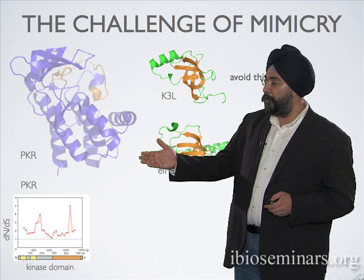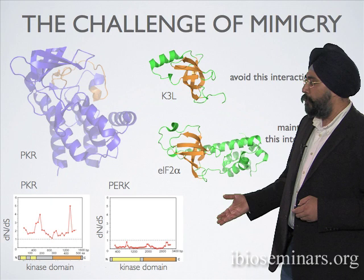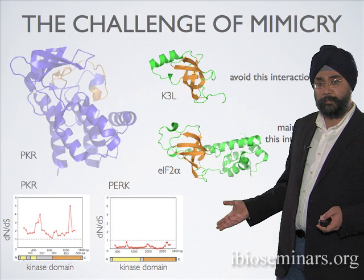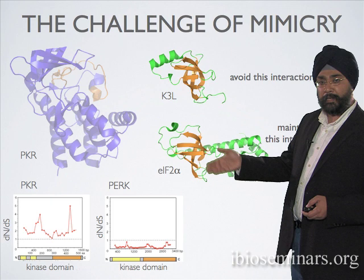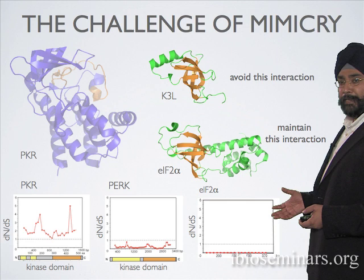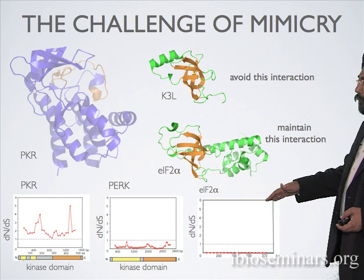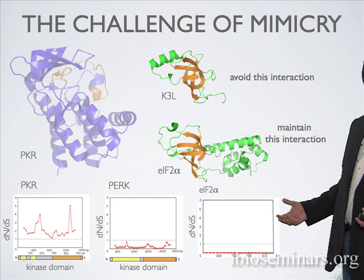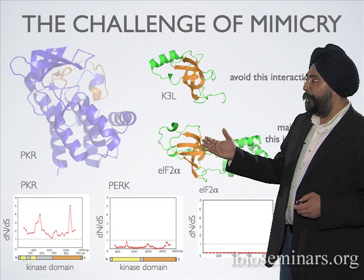There is not a single domain where the DnDs signature drops below one, which means pretty much every domain of PKR is evolving under positive selection in the comparison between human and rhesus PKR. When we compare PKR to its closest relative kinase, PERK — which is not involved in antiviral immunity — the signature is completely one of purifying selection, not positive selection. This gets even more interesting when you look at EIF2-alpha, which is so important for translation that it has not tolerated any amino acid changes over the course of primate evolution.